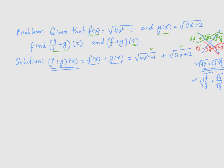Now that I have found (f+g), which is this, finding (f+g)(2) is pretty straightforward, which is square root of 4x², 4 times x. Every time I see x, I replace it by 2. So, 4 times 2² - 1 plus √(3 times x). But x is being replaced by 2, then plus 2.